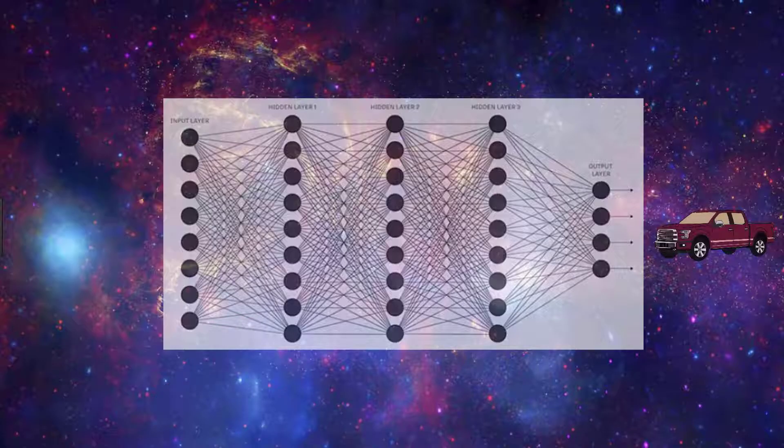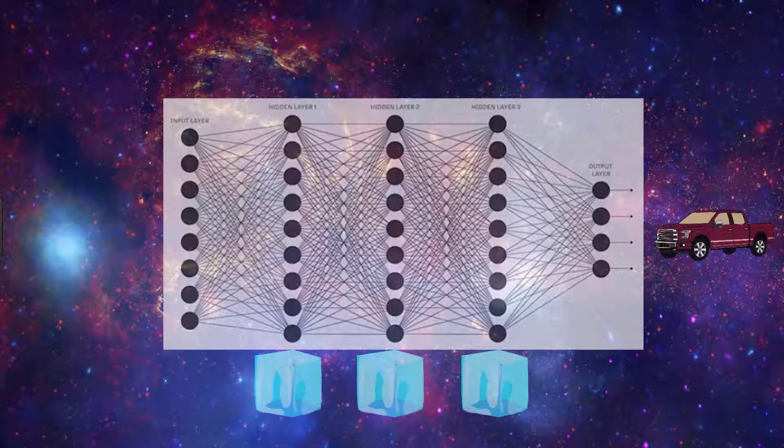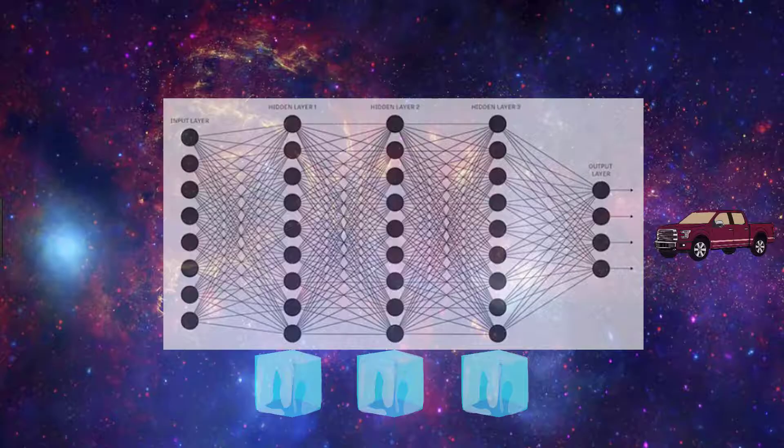So after we've modified the structure of the existing network, we then want to freeze the layers in our new model that came from the original model. By freezing, I mean that we don't want the weights for these layers to update whenever we train the model on our new data for our new task. We want to keep all of these weights the same as they were after being trained on the original task. We only want the weights in our new or modified layers to be updating.